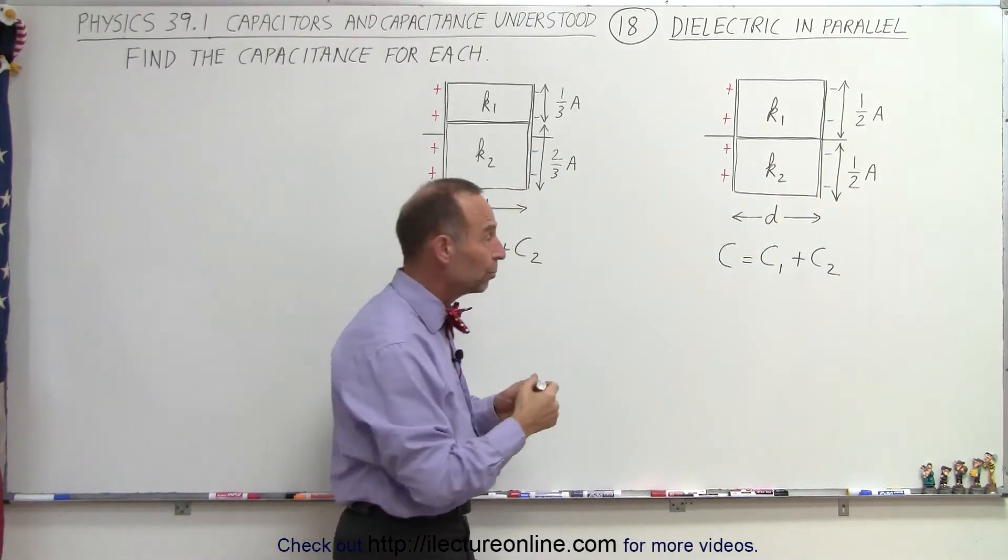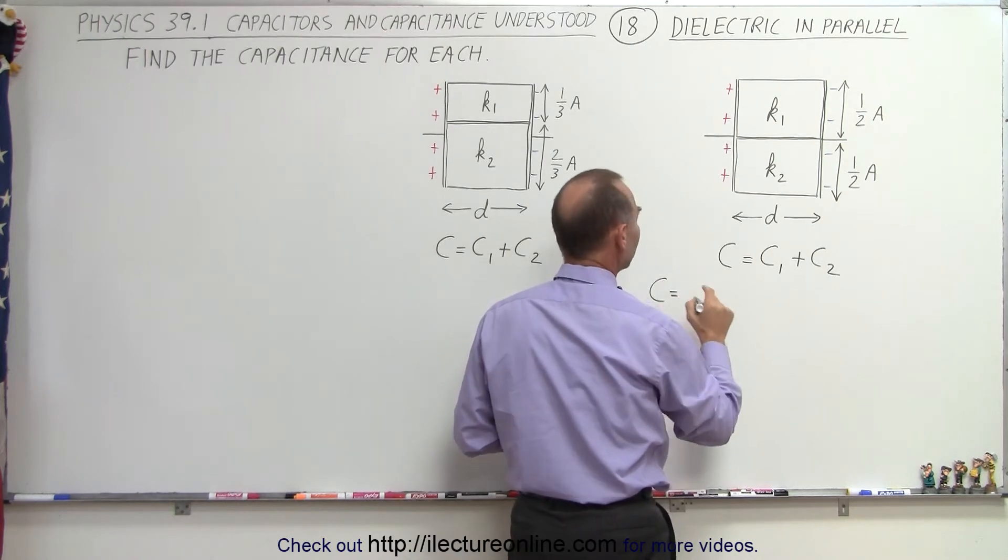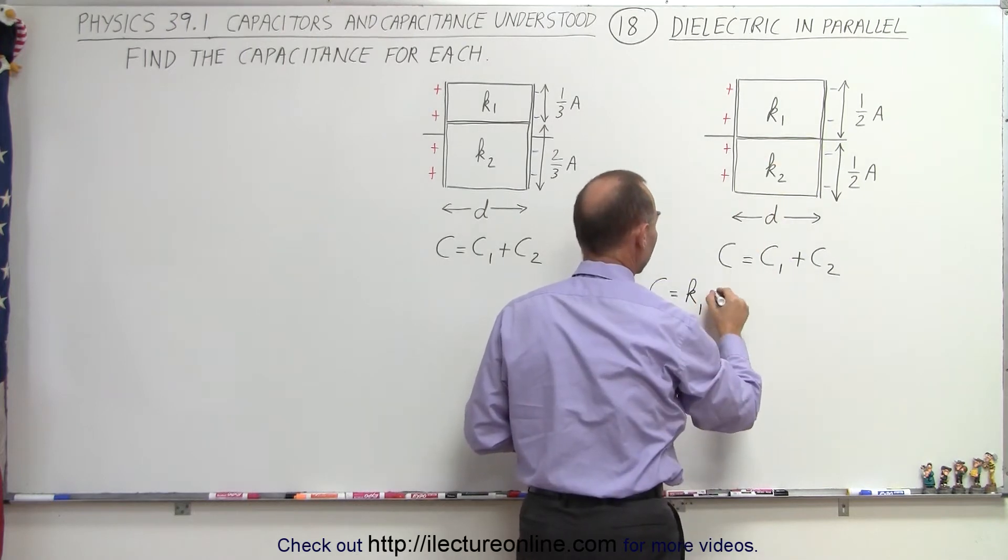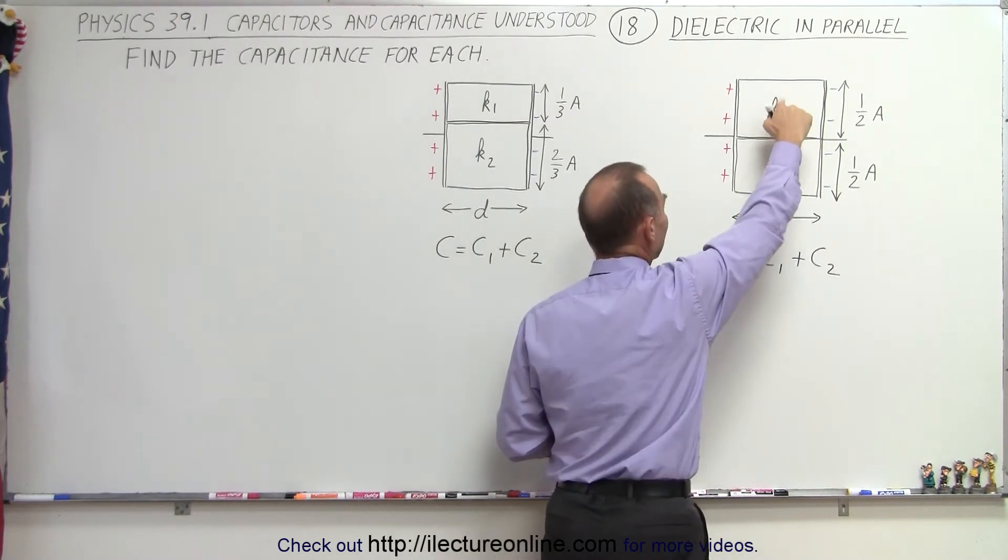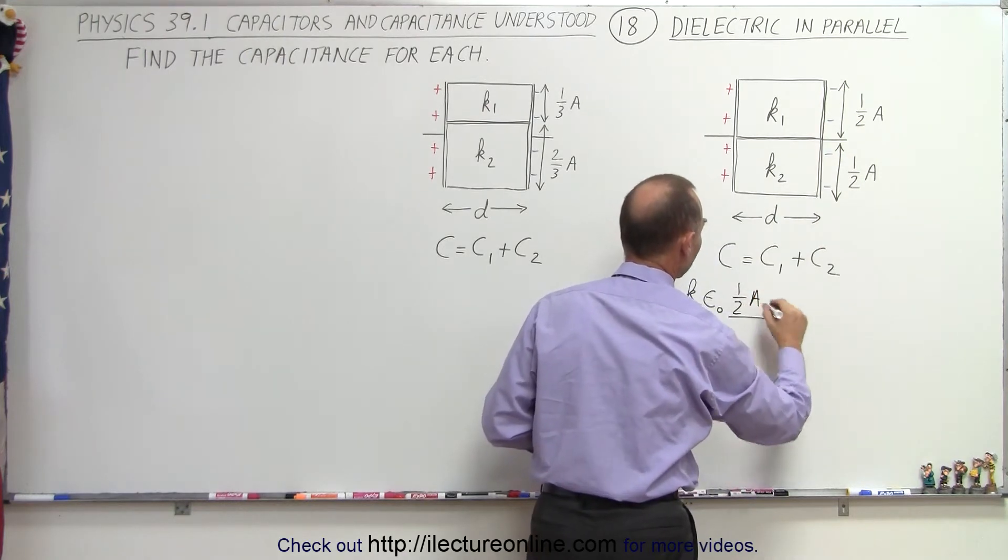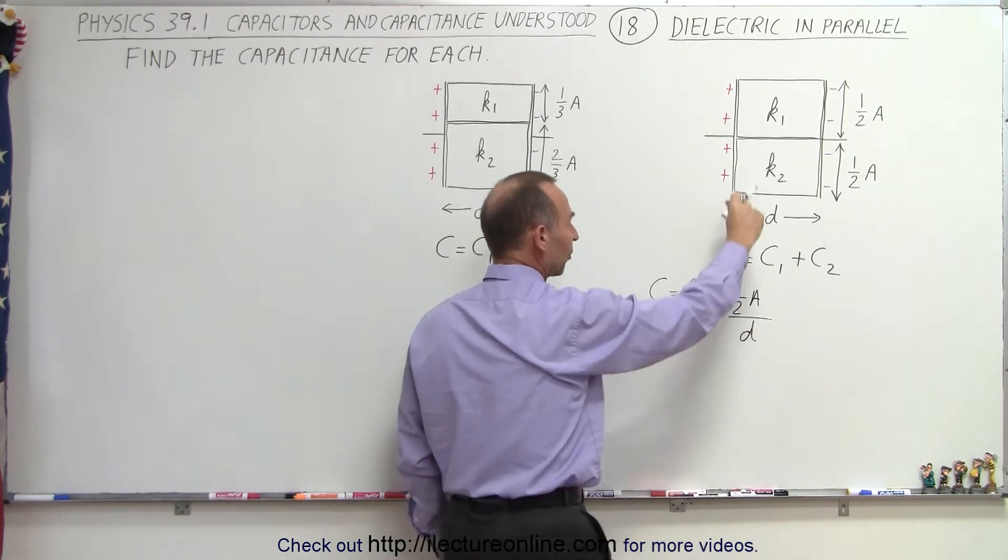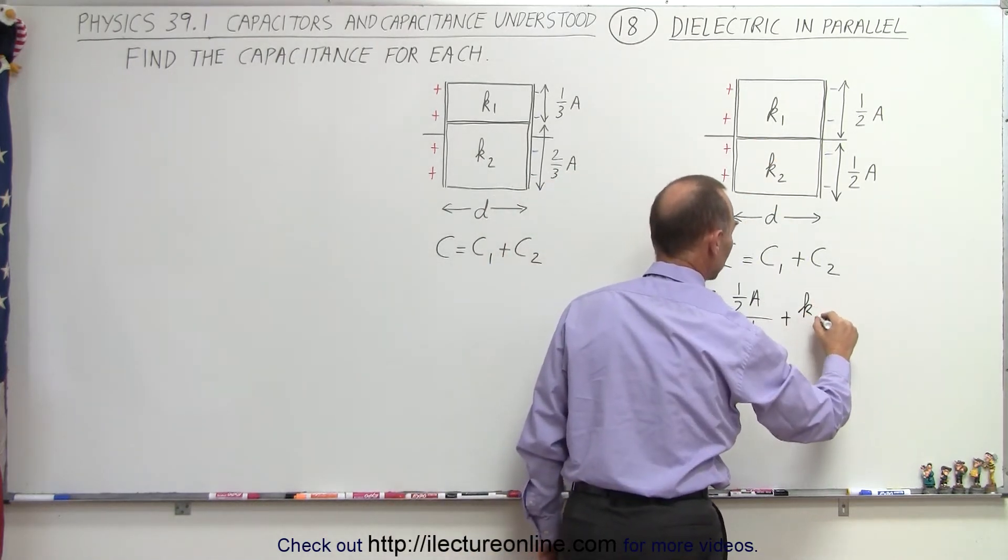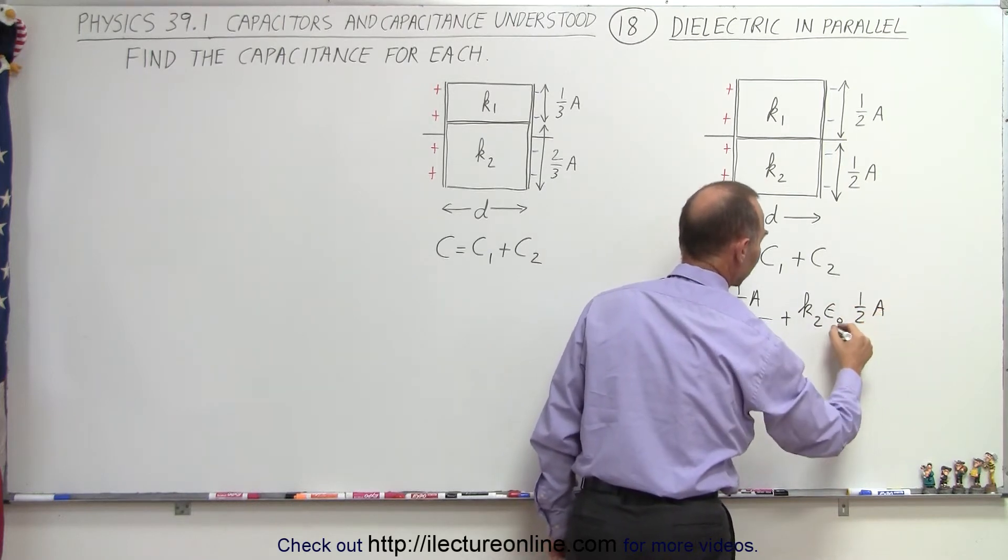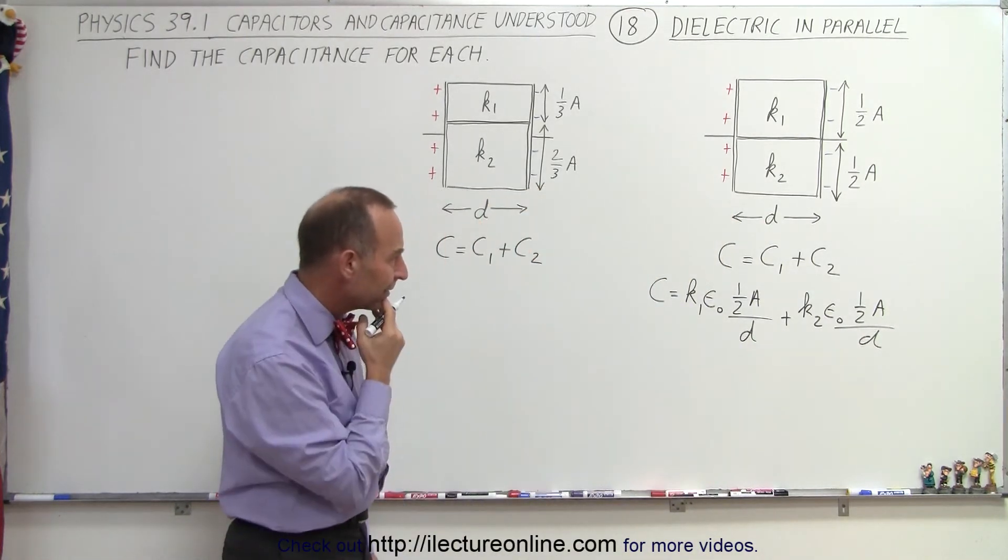If we now put into place what those two pieces are equal to we can write it as follows: the capacitance is equal to the dielectric constant k1 epsilon sub naught times the area, in this case it's only half the area of the total capacitor, all divided by the distance. And the distance will be the same for both, so that would be the capacitance of the first piece plus k2 epsilon sub naught, again half the area of the capacitor divided by d.